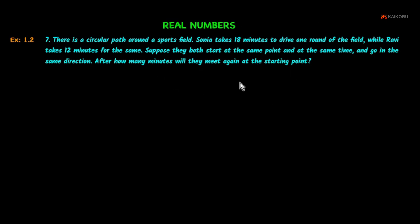How many minutes will they meet again at the starting point? If you want to visualize a circular path, here is a sports field — this is a circular path. We mark Sonia and Ravi at one starting point. So this is the starting point.